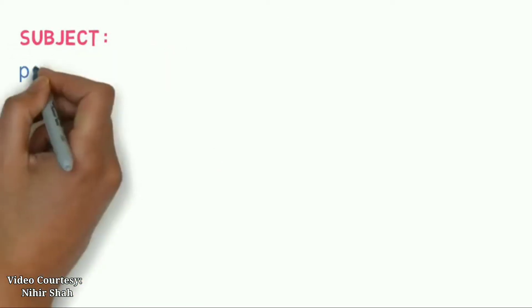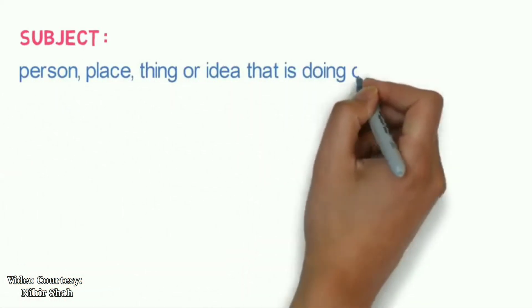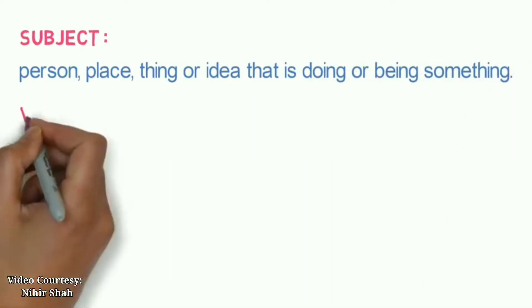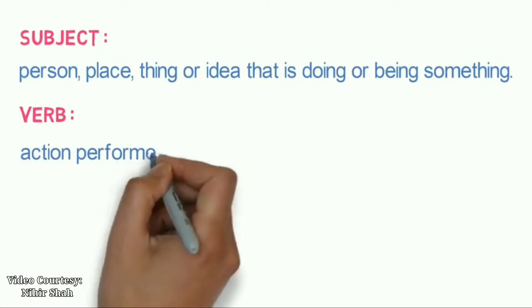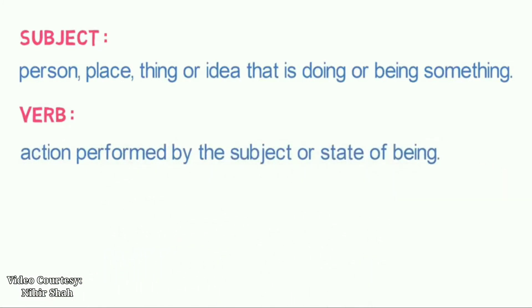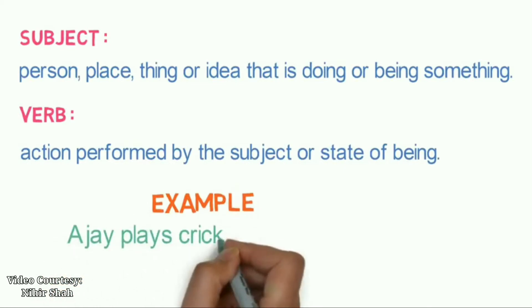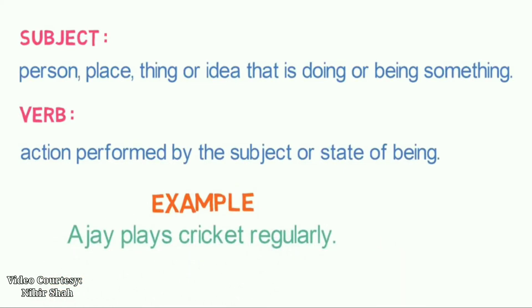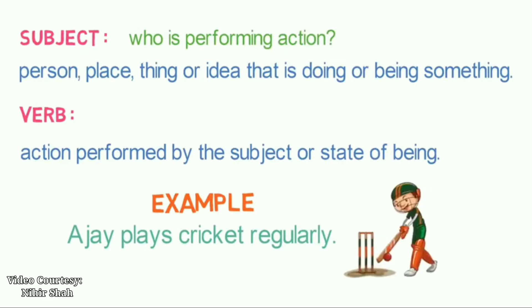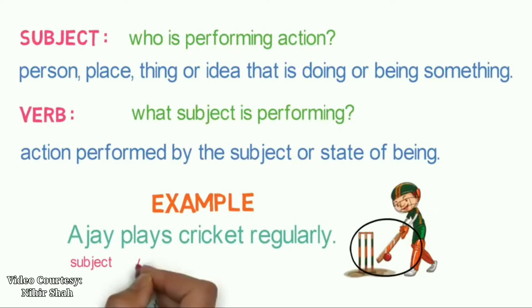So, what is the subject in a sentence? The subject of a sentence is the person, place, thing, or idea that is doing or being something. And what is the verb in a sentence? It is the action performed by the subject, or a state of being. For example: 'Ajay plays cricket regularly.' To identify the subject, ask: who is performing the action of playing? It is Ajay. So Ajay is the subject. To identify the verb, ask: what is the subject performing? It is playing. So 'plays' is the verb. This way, we can identify the subject and verb by asking these questions.